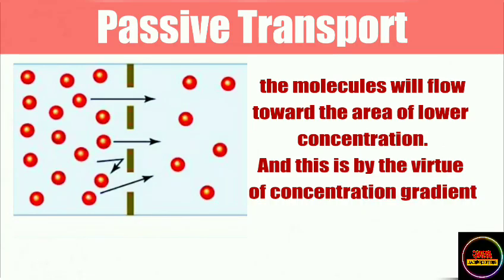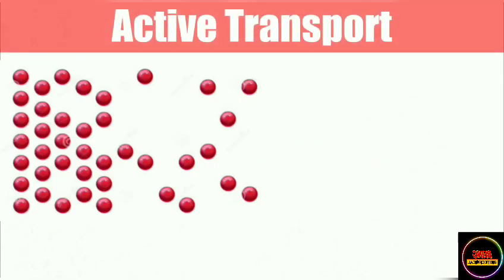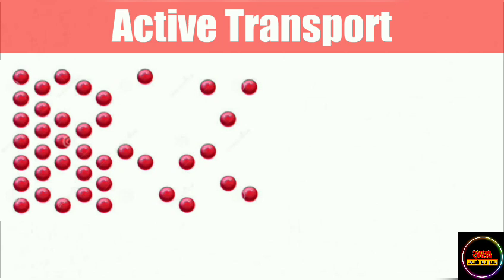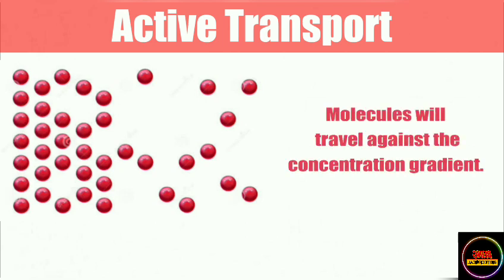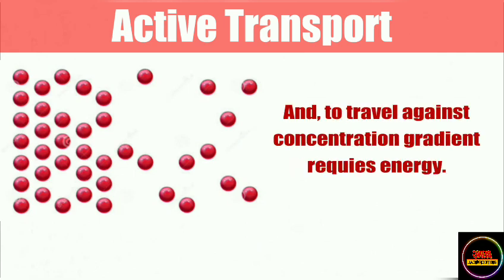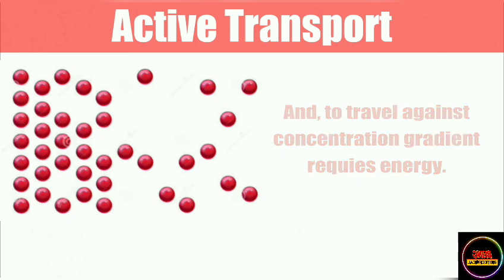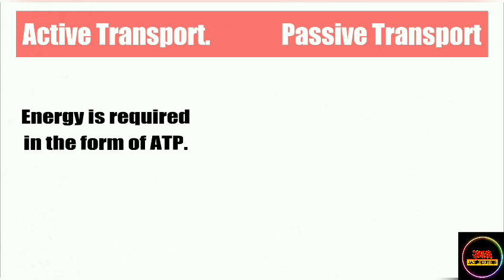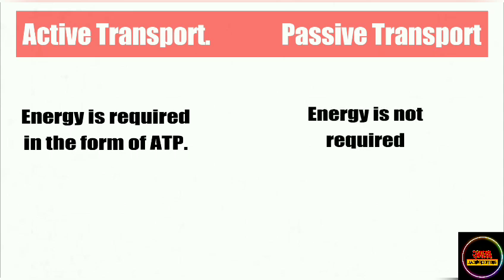In active transport, however, energy in the form of ATP is required, because molecules travel against the concentration gradient — from an area of low concentration to an area of higher concentration. This is the second difference: active transport requires ATP energy, while passive transport requires none.